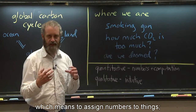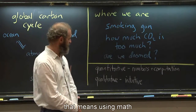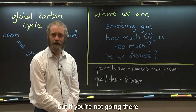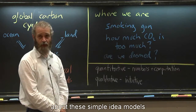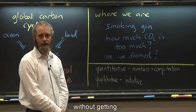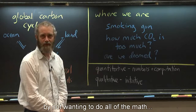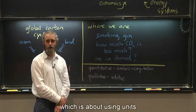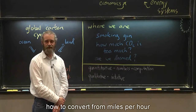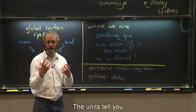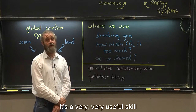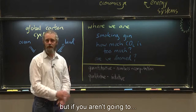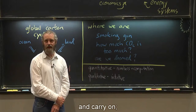The goal of science is to be quantitative, which means assigning numbers to things — using math, computation, and things like that. This class will be taught from a quantitative point of view, but if you're not going there, you can still understand quite a bit about these simple idea models of Earth's climate without the math. I would hate to have you turned back by not wanting to deal with math. There is an early exercise about using units — how to convert from miles per hour to kilometers per second, for example. Units tell you how numbers have to be treated; it's a very useful skill both in science and in life. I hope you'll follow me through that, but if not, don't be intimidated — just turn the page and carry on, and you will be fine.